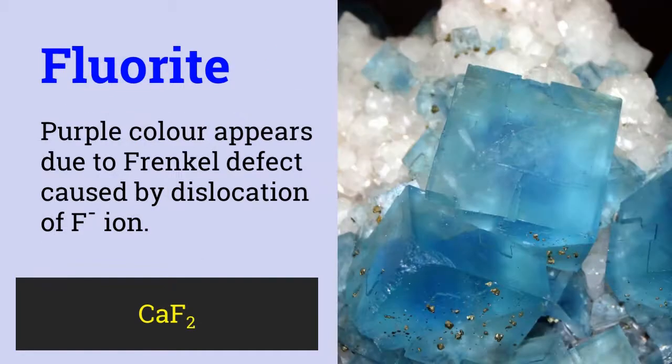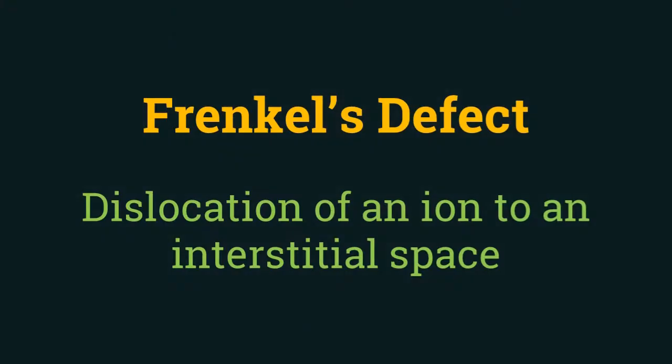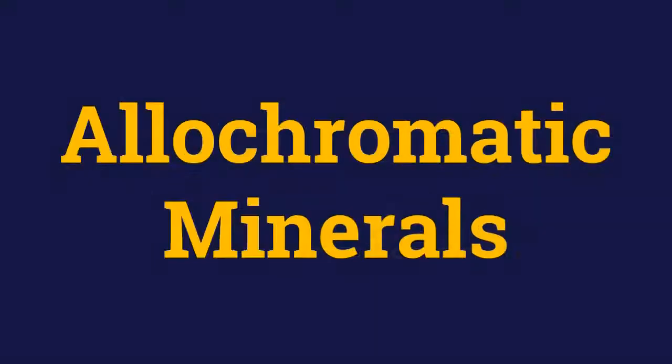The true color of fluorite is green but it is also found in purple color due to Frenkel defect, where Frenkel defect is a dislocation defect in a crystal where usually a smaller ion of the constituent particle gets displaced from its position into the space between the larger ions.